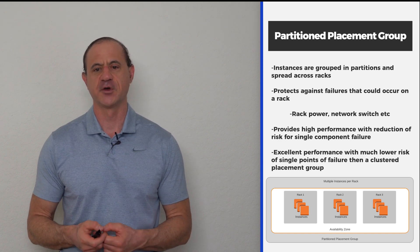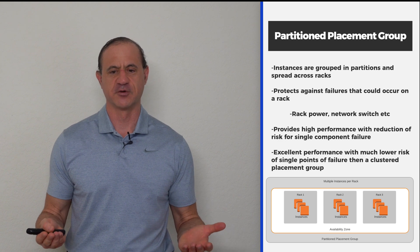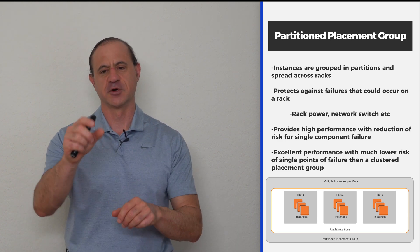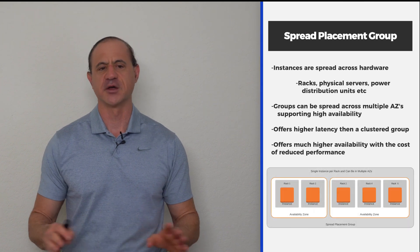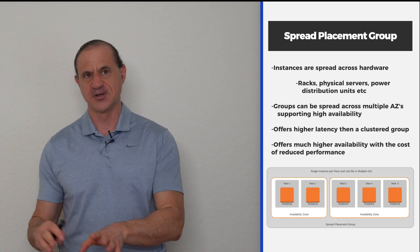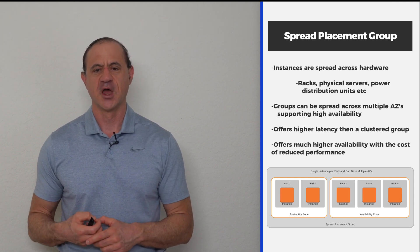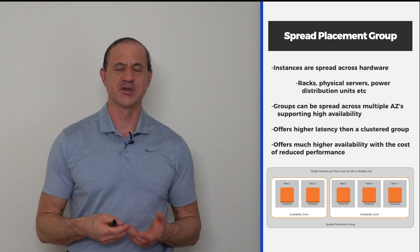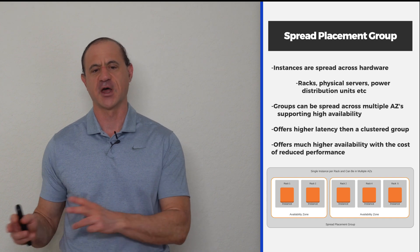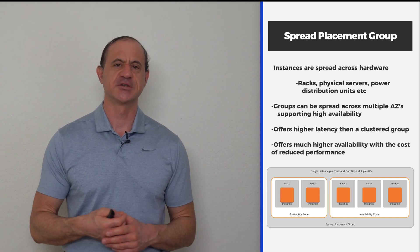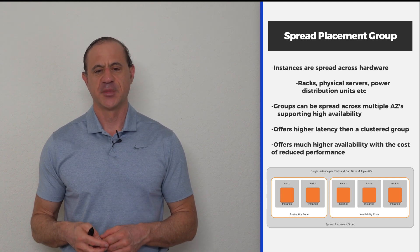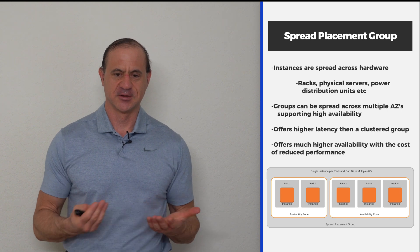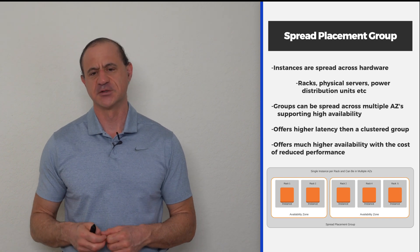You can see in this graphic how we've spread our partition placement group across the data center, taking the load and placing it in multiple places inside of our data center. The next concept is a spread placement group. A spread placement group places your instances across hardware — you're going to be on different racks, your servers will be different, your PDUs or power distribution environment will be different, so you get a lot more protection. You can spread these groups across multiple availability zones if you need to. This is where you can still have high performance, but now you've added redundancy. The tradeoff is that spreading instances over a larger distance and more racks means higher latency — the cost is reduced performance.